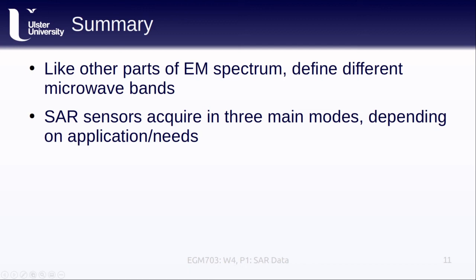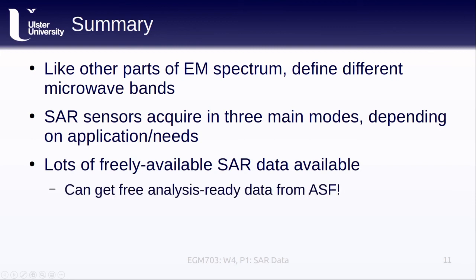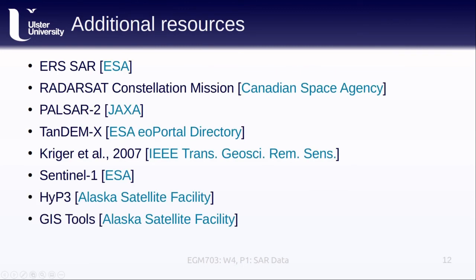We've seen how there are a number of freely available SAR datasets available, as well as free processing options. For example, the SNAP toolbox that we used in last week's practical, or the analysis-ready data via HYPE. I've included links to the mission pages for a number of SAR missions discussed here. We have ERS from the European Space Agency, the Radarsat Constellation mission from the Canadian Space Agency, PALSAR-2 from JAXA, TandemX from the ESA EO portal directory, and Sentinel-1. There's also a link to this paper from Krieger et al. that provides the details behind the TandemX mission. And finally, we have links to more information about HYPE, including a link to some information about the GIS analysis toolbox that they have put together. So that's all for this lesson. I hope you found it interesting, and if you have any questions, please don't hesitate to email me or post in the discussion forum on Blackboard. Bye!